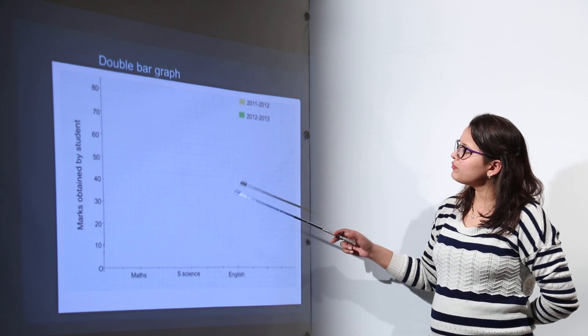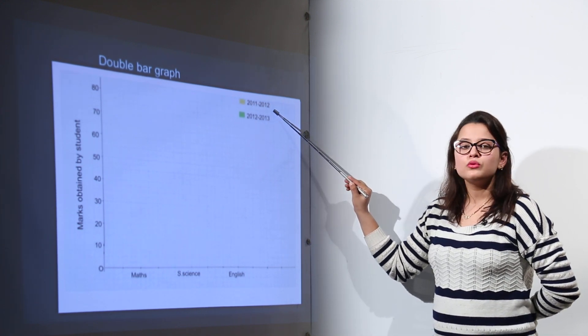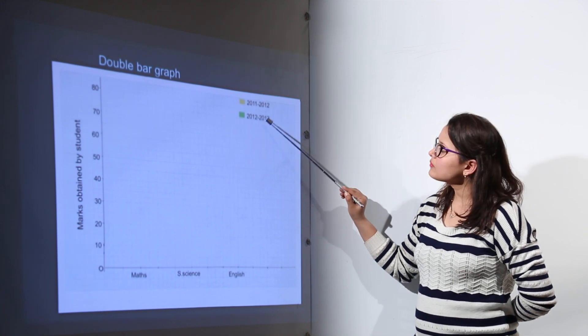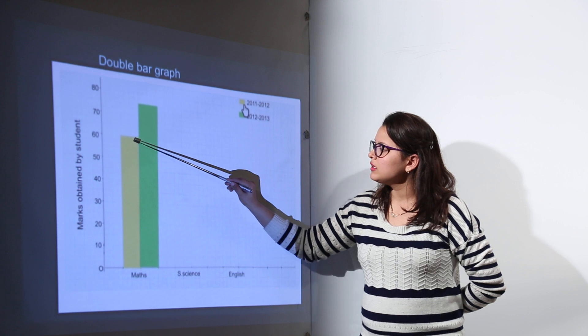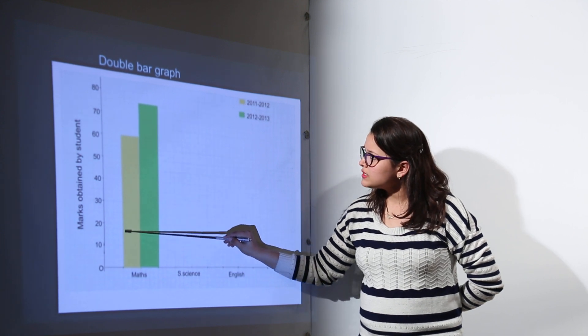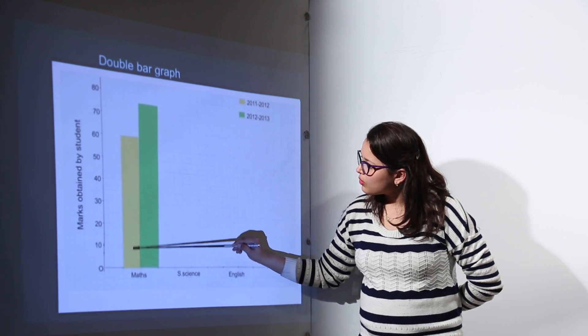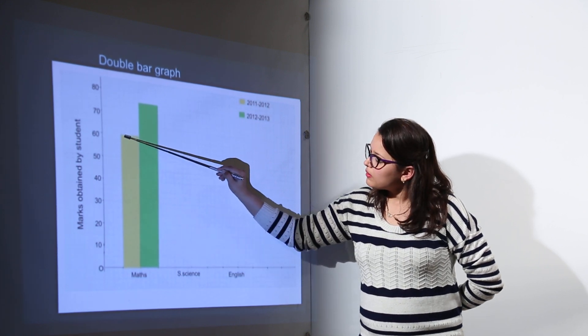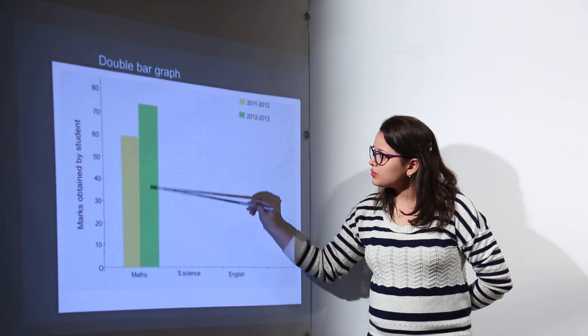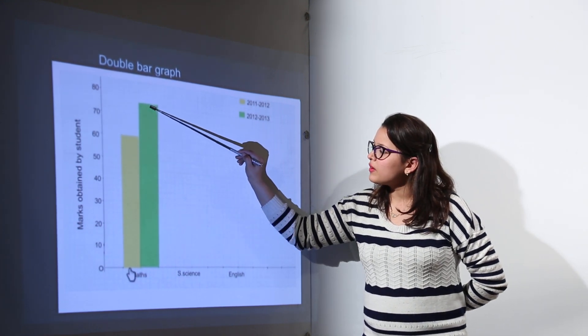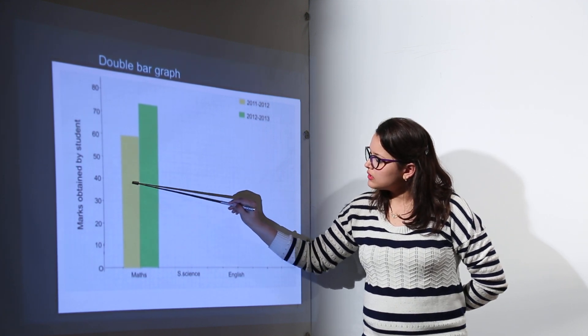Now here the one difference that you would have is yellow bars will be representing the data between 2011 and 12 whereas the green ones are representing data between 2012 and 13. Now the 2011 and 12 data is showing us that in maths the student secured 60% marks whereas in the next year that is 2012 and 13 the student secured 75% marks.